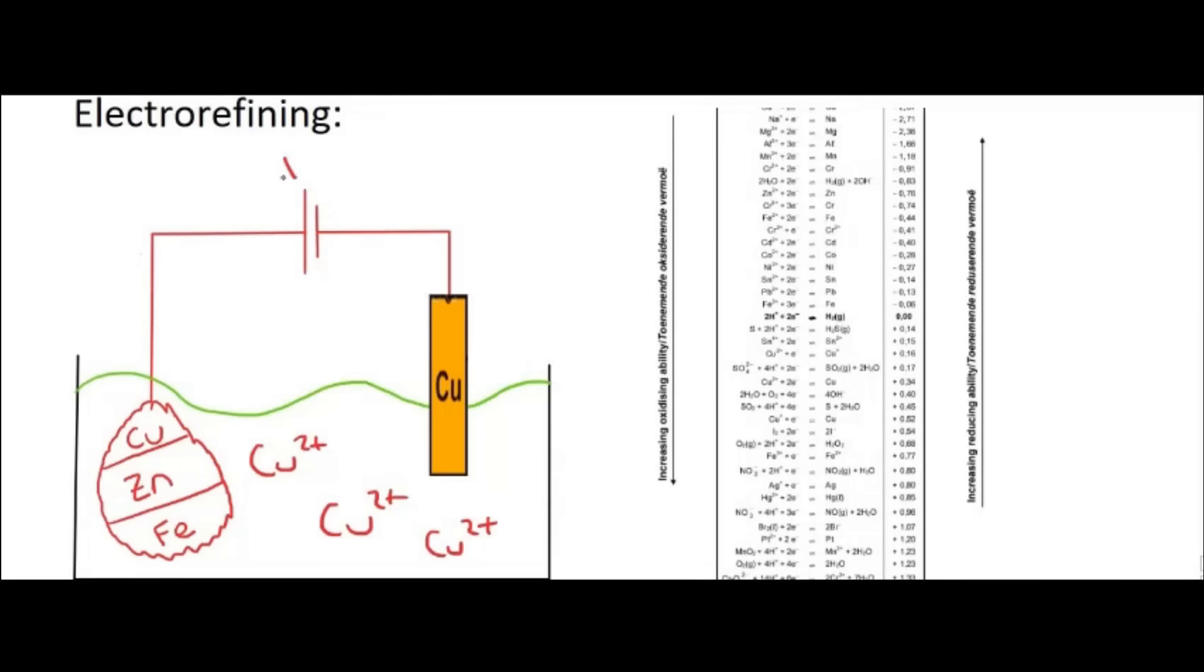So we switch the circuit on. What would happen is the following. This here is the positive terminal of the battery. What the positive terminal of the battery does is it's like a vacuum cleaner which sucks electrons. And so it's going to force this copper and the zinc and the iron to give away electrons. But it might not be able to do it to all of them. It depends on how strong the battery is.